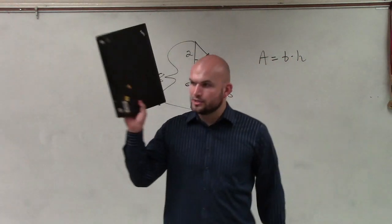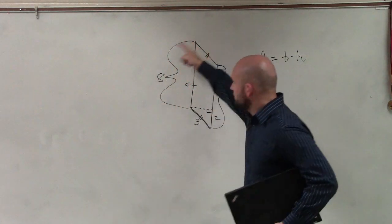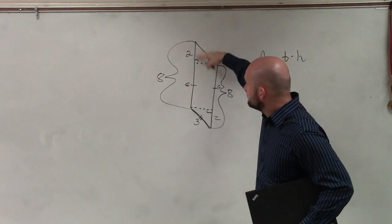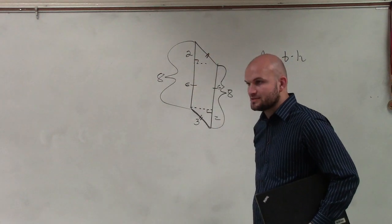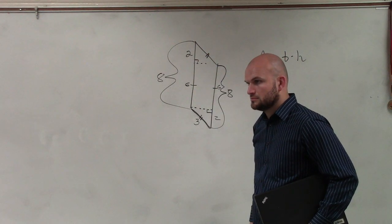Wait, how do we get six? This whole length is eight. If that length there is two, that length would have to be six.